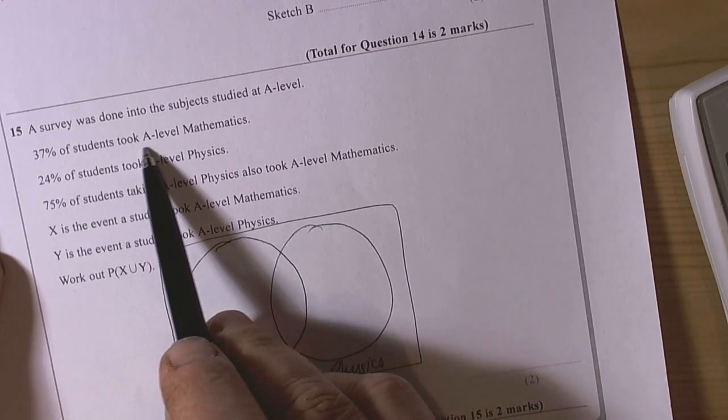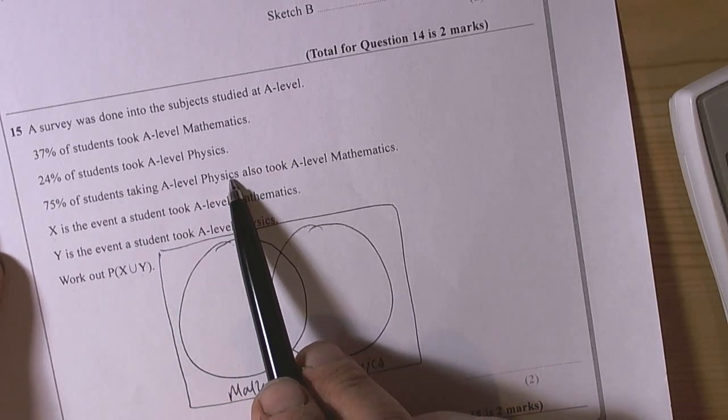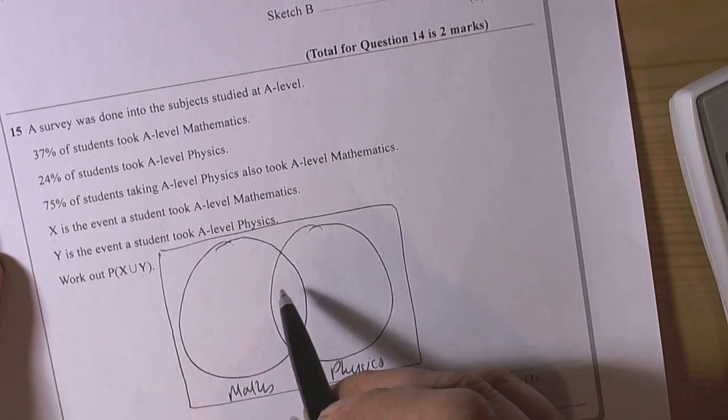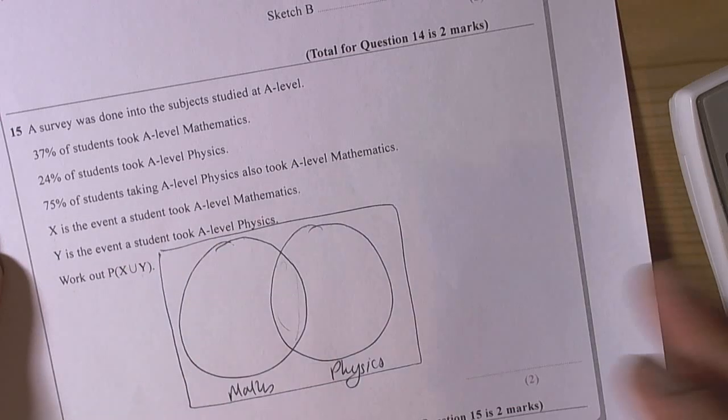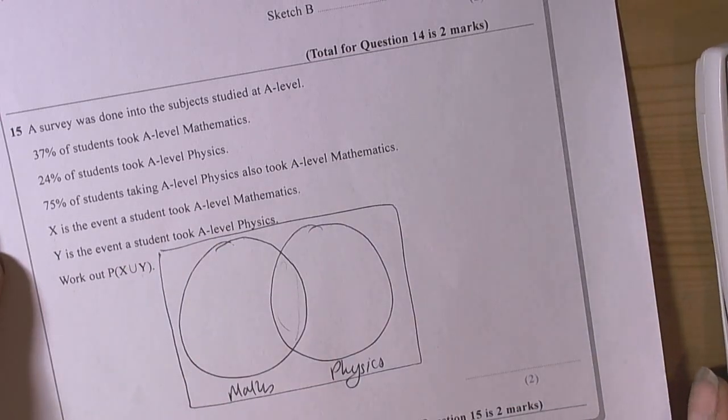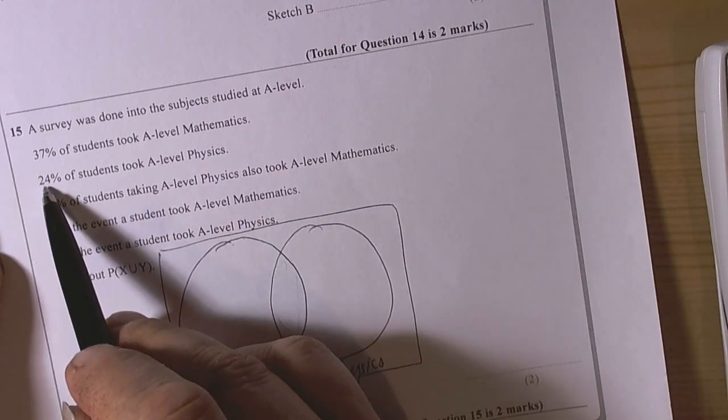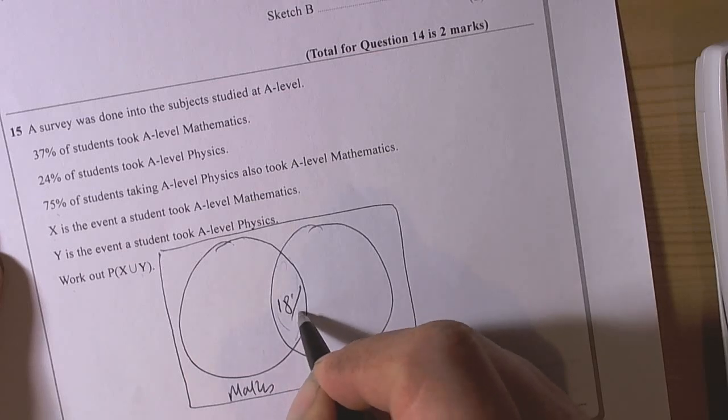So what are they saying? 37% of students took A level maths, 24% took A level physics also took A level maths, so basically they're telling us the intersection here then. 75% of students who took A level physics, so we want 3 quarters of 24, 6 is a quarter so 18, so 18% there.